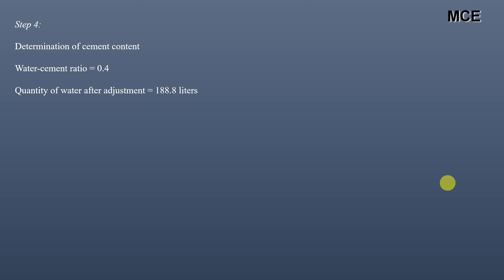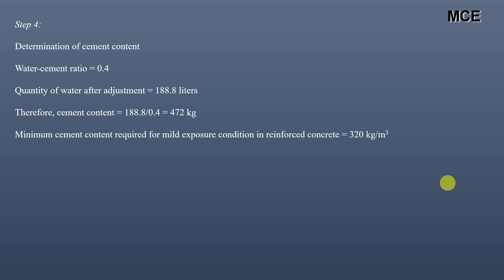To find cement content: water-cement ratio is 0.4 and adjusted water quantity is 188.8 liters. Cement content = water / w/c ratio = 188.8 / 0.4 = 472 kg. The minimum cement content for moderate exposure in reinforced concrete per IS code is 320 kg/m³, so 472 kg/m³ is acceptable.